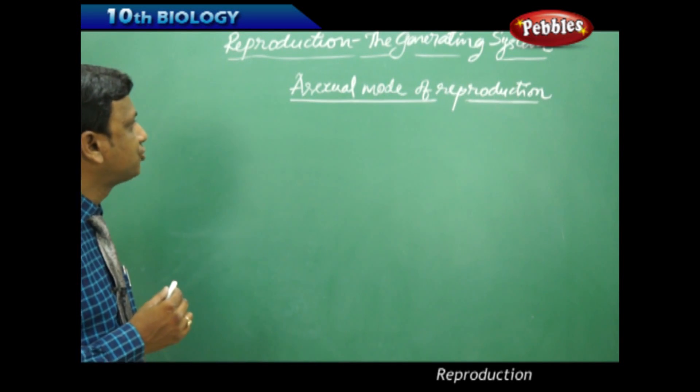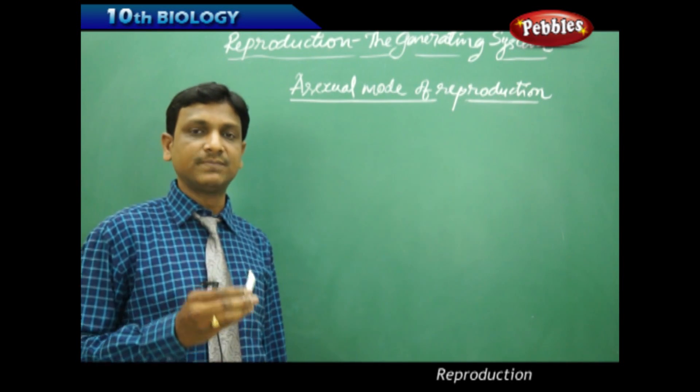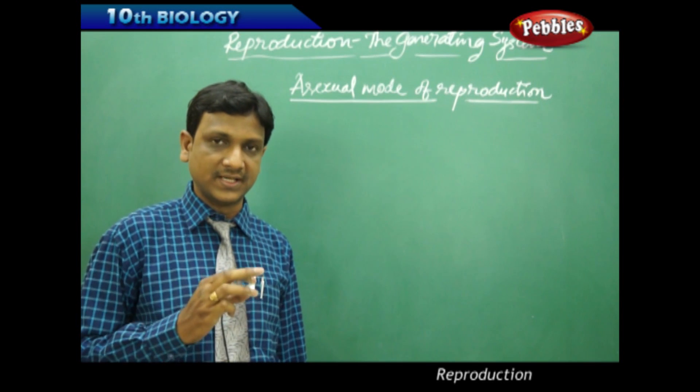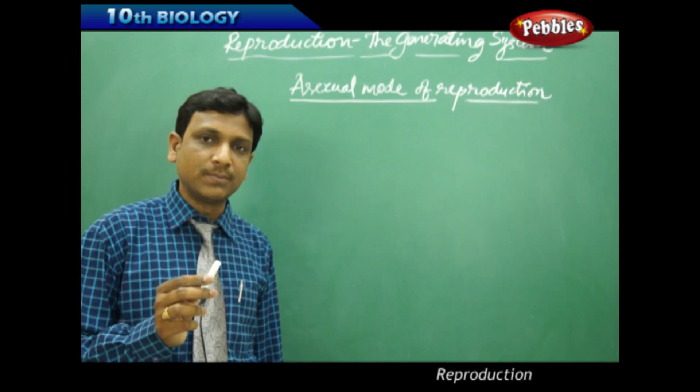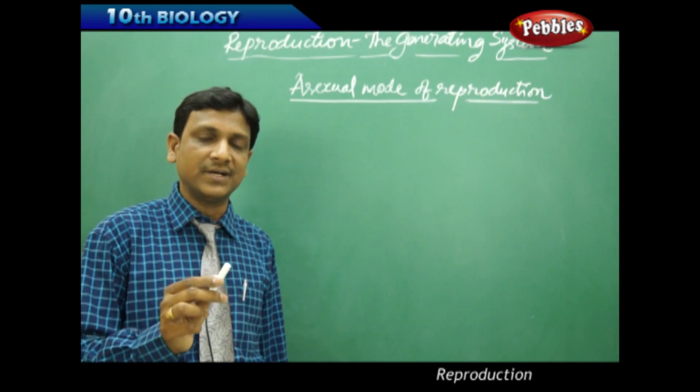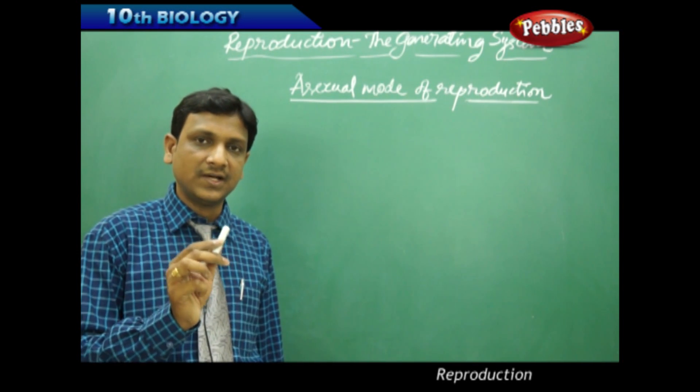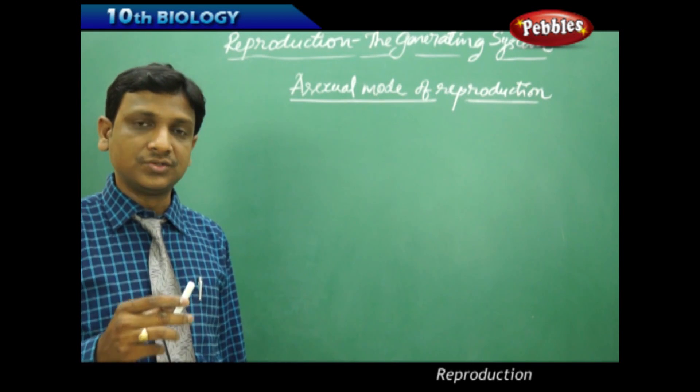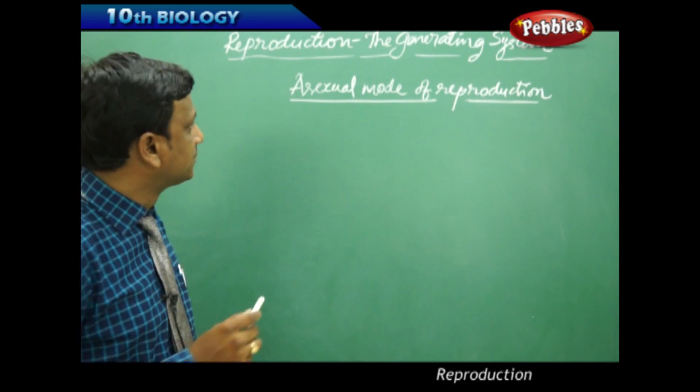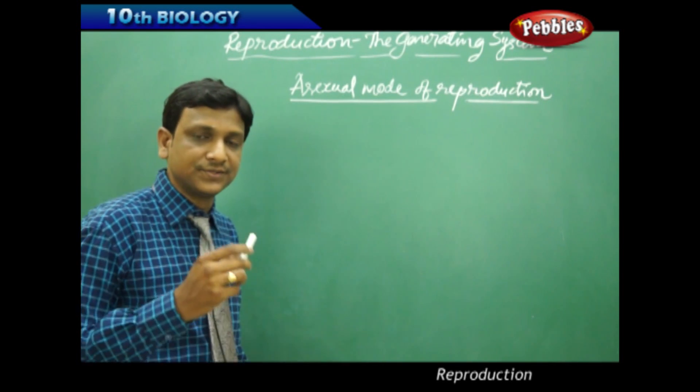Reproduction is basically two types: sexual reproduction and asexual reproduction, which you have studied in your lower classes. Sexual reproduction involves the fusion of gametes - male and female gametes fuse together to form a zygote. Whereas in asexual reproduction, there is no fusion of gametes.